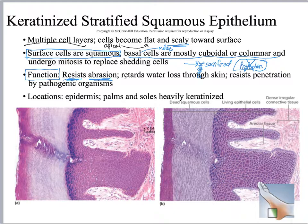Multiple layers of cells also helps prevent water loss because the thicker something is, the harder it is for water to get out. Also, if something is thick and you get a scratch that only goes through a few layers of cells, then if there was a pathogen on whatever scratched you — like a bacteria or a virus — it doesn't get into your body. So it creates a thicker barrier.